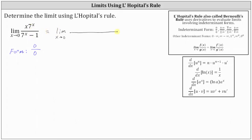To differentiate x times seven to the power of x, we need to apply the product rule, where we have the first function of x times the derivative of the second function, which is the derivative of seven to the power of x — that is, natural log seven times seven to the power of x. And then we have plus the second function of seven to the power of x times the derivative of the first function, and the derivative of x is equal to one.